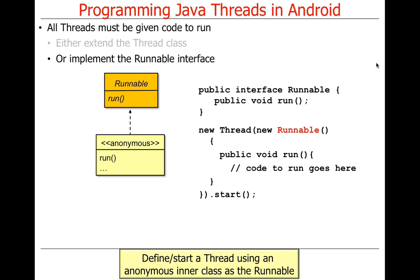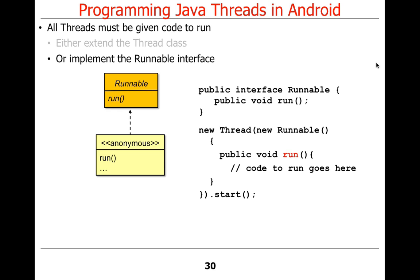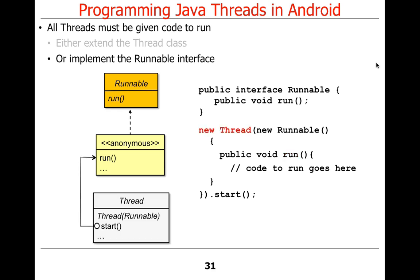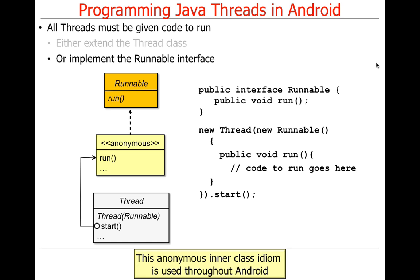The other way is to use a so-called anonymous inner class as the Runnable. Here we implement the Runnable interface inline — we say 'new Runnable', provide the code right there, pass that to a Thread, and start it. This anonymous inner class idiom is used all over the place in Android — very, very common — and I'll come back and talk about pros and cons of this approach in a moment.